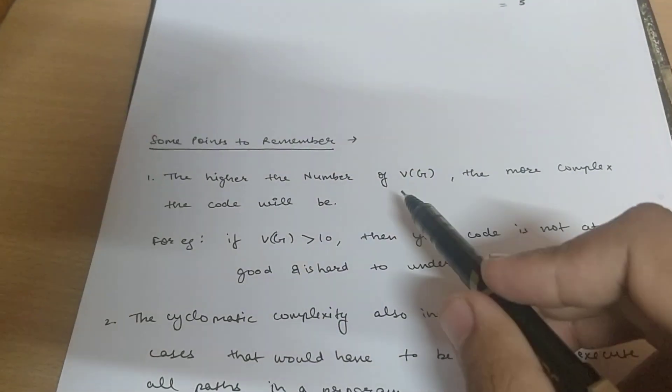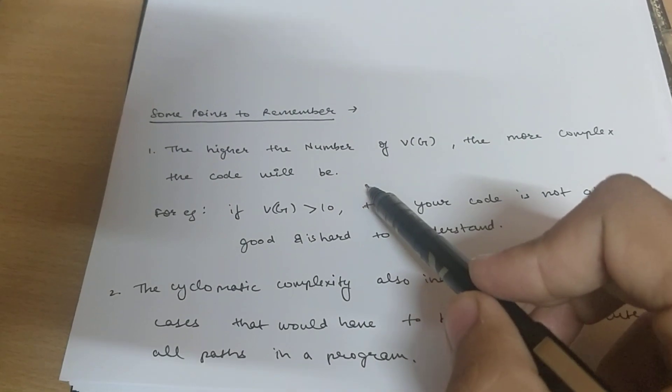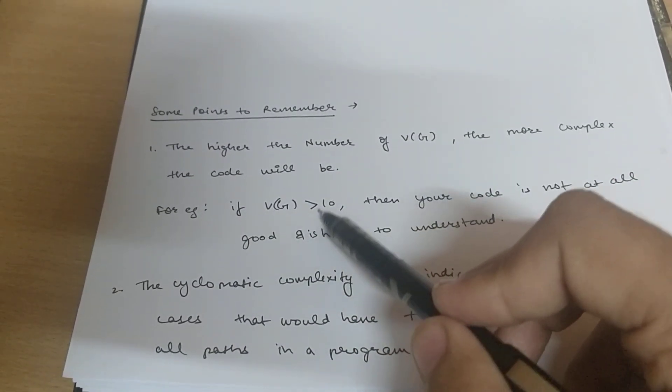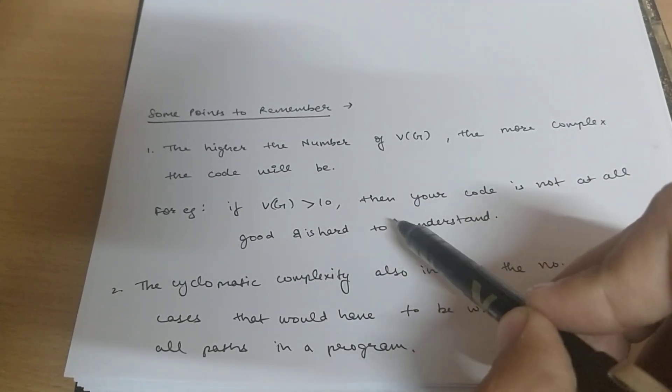The higher the number of Cyclomatic complexity, the more complex the code will be. For example, if VG greater than 10, then your code is not at all good and is hard to understand.